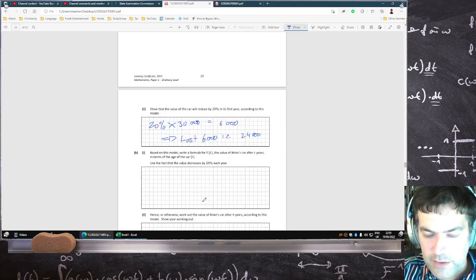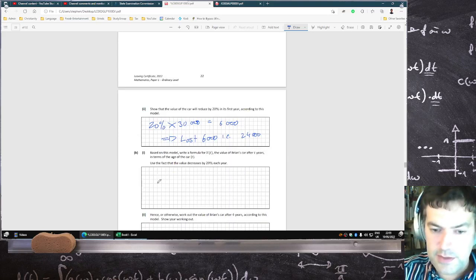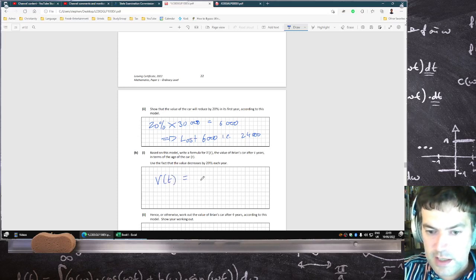Based on this model, write a formula for V(t). So it's reducing by 20% each year, starting at 30,000. So that's 30,000 times 0.8 power t.